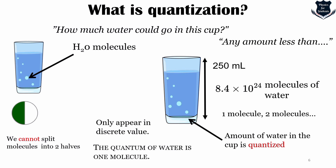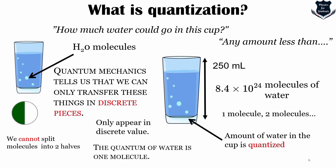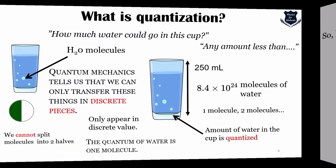In quantum mechanics, the word 'quantum' comes from the Latin word 'quantus,' which means a certain amount. The name quantum mechanics tells us that many things appear in discrete values — the quantum of water is one molecule. When objects interchange by exchanging energy, momentum, or angular momentum, in the classical scenario we assumed we could transfer any amount we wished. However, quantum mechanics tells us we can only transfer these things in discrete pieces, because they are quantized.